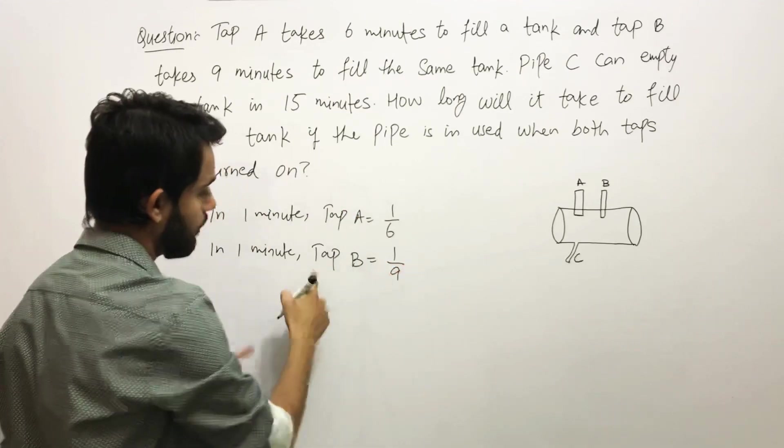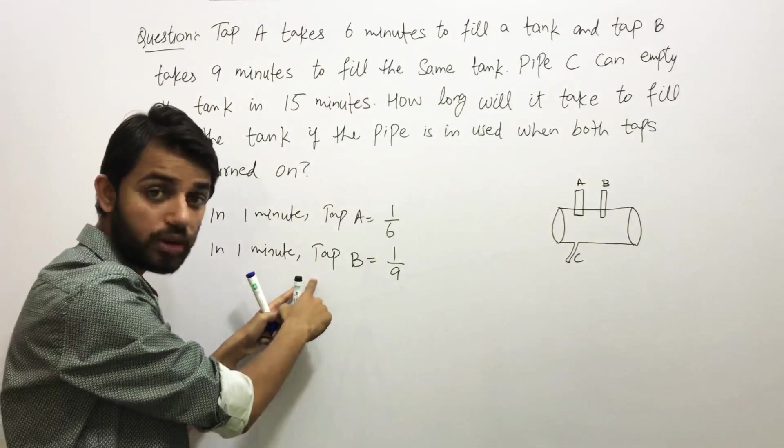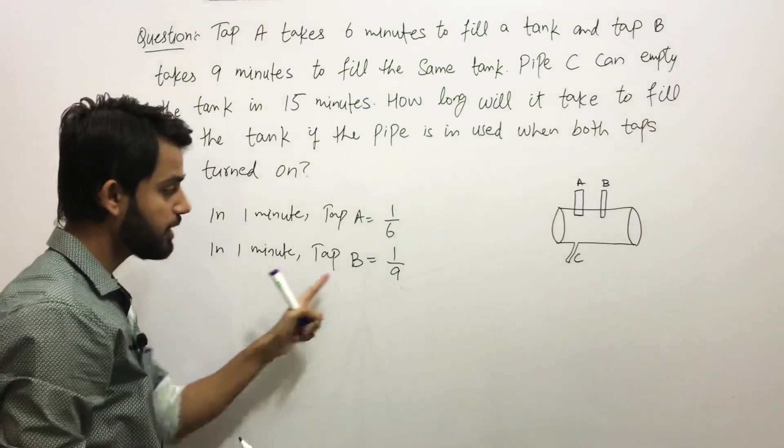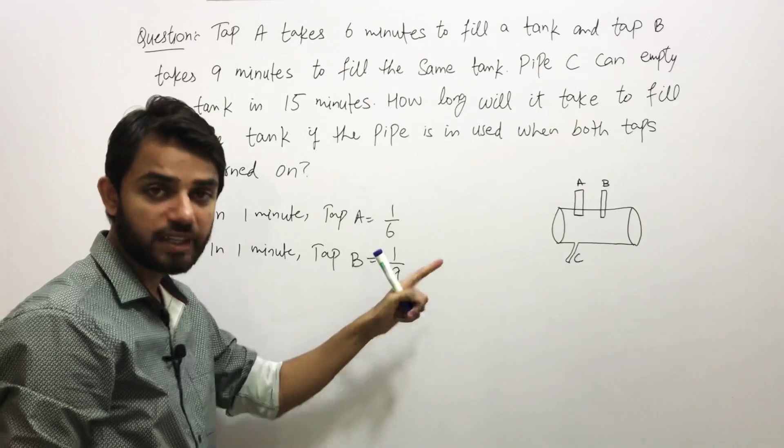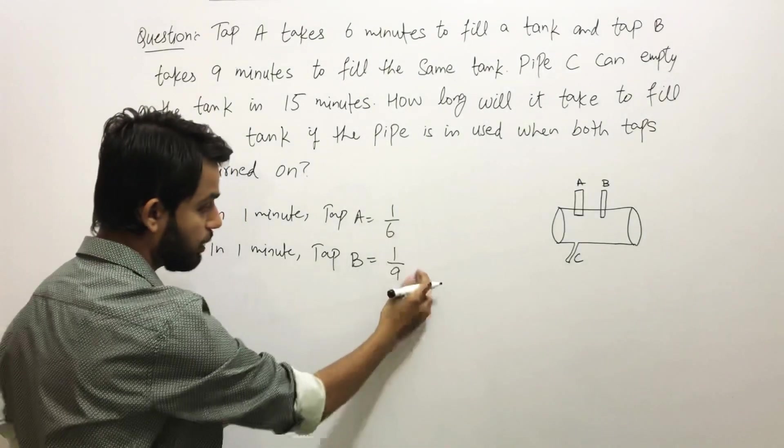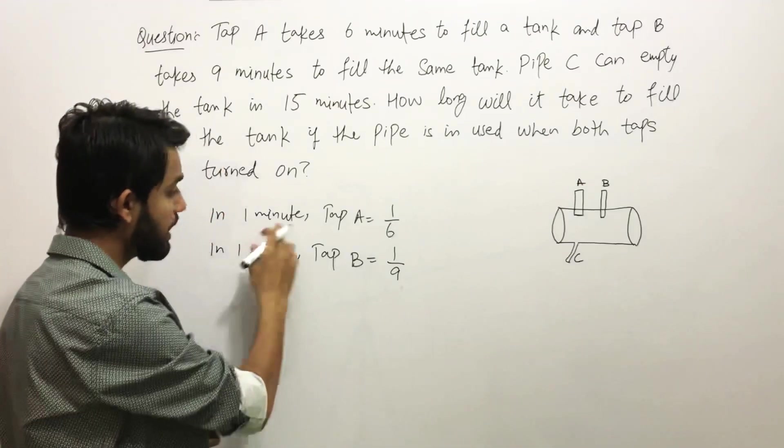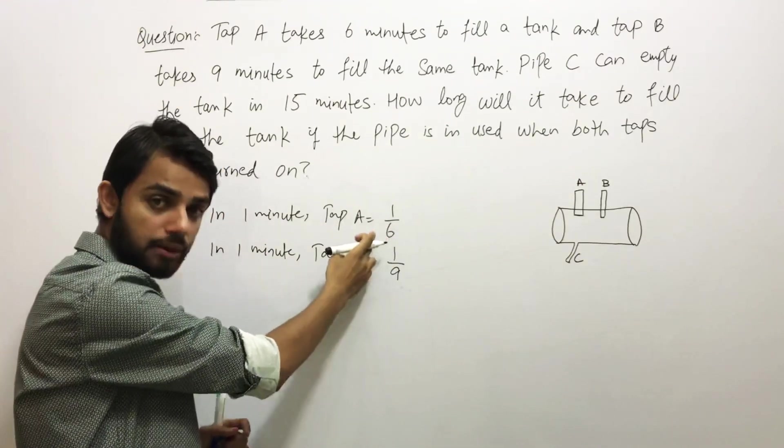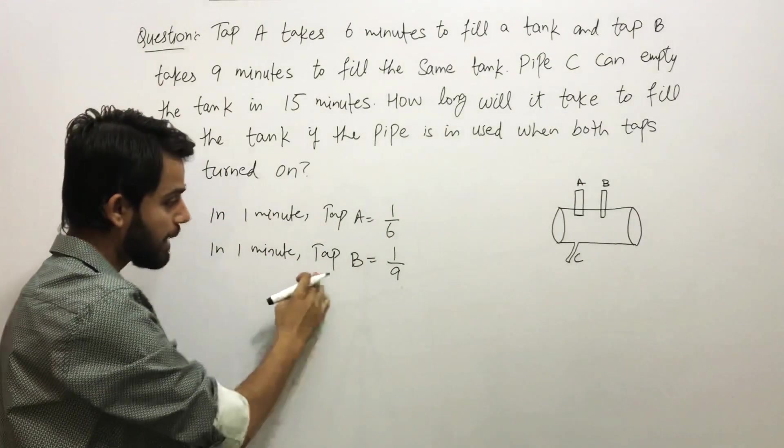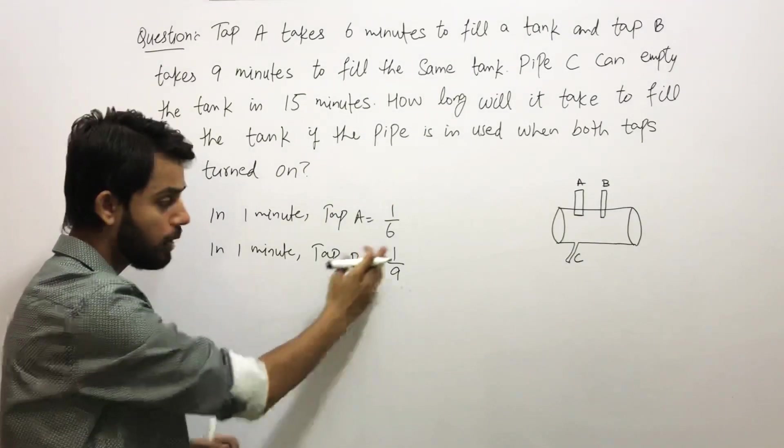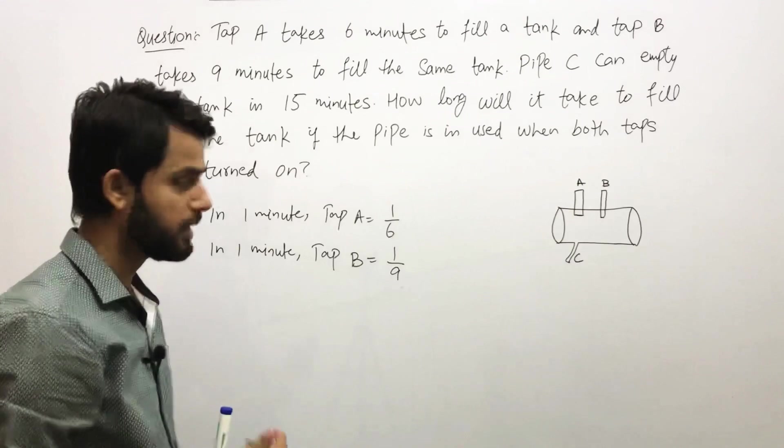In 1 minute, for Tap B it will take 1/9. For Tap B, which was taking alone 9 minutes to fill up the tank, in 1 minute it will fill 1/9 of the tank. Please notice that these two timings are alone.